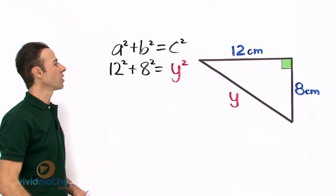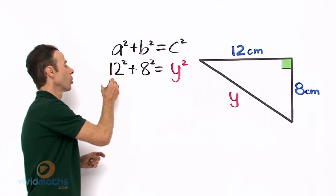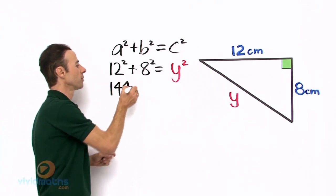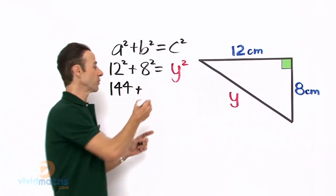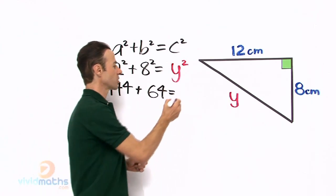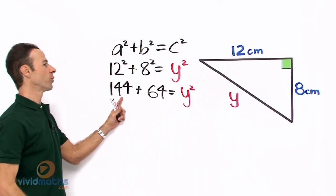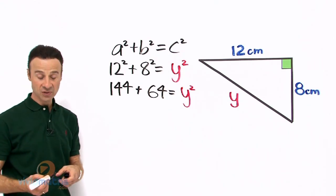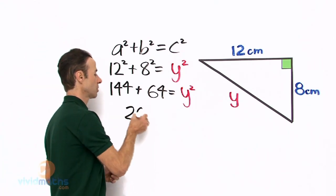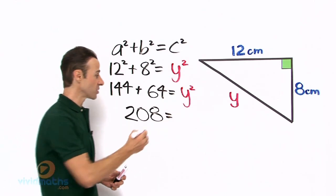Let us start to solve this after we have substituted. So 12 squared will yield 144, plus 8 squared is 64, and that again equals y squared. Let us add the left hand side: 144 plus 64 gives us 208, and that equals the y squared on the right hand side.